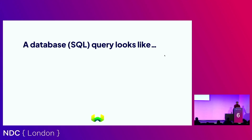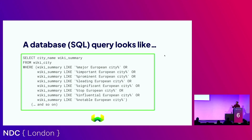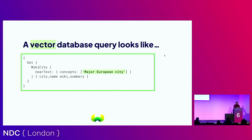For a normal SQL database, queries would look something like this if you're interested in major European cities — you'd put in all the regular expressions. The equivalent query for a vector database just uses the phrase 'major European city.' If you run this query, you get back anything that's even semantically relevant to major European cities. You don't have to spell out all the different synonyms and different ways of saying the same thing, because it does this semantic matching of what you mean and retrieves that for you.